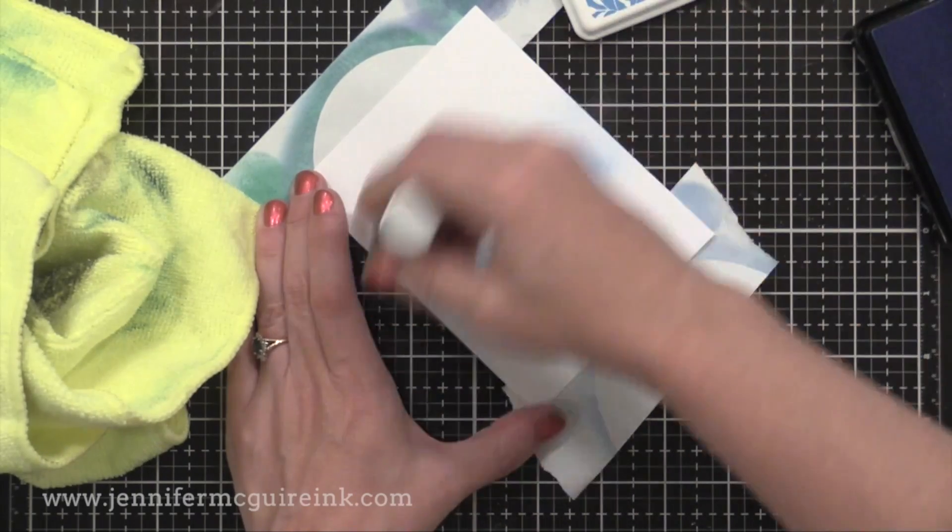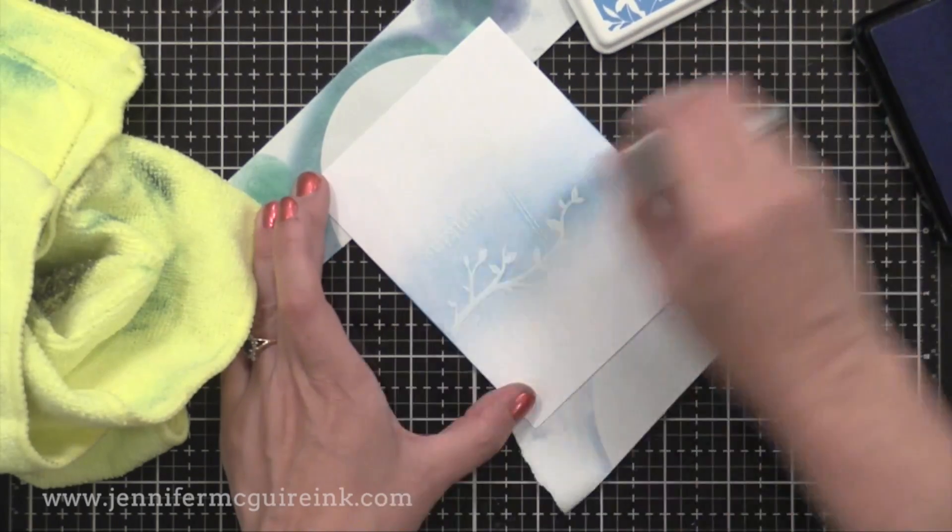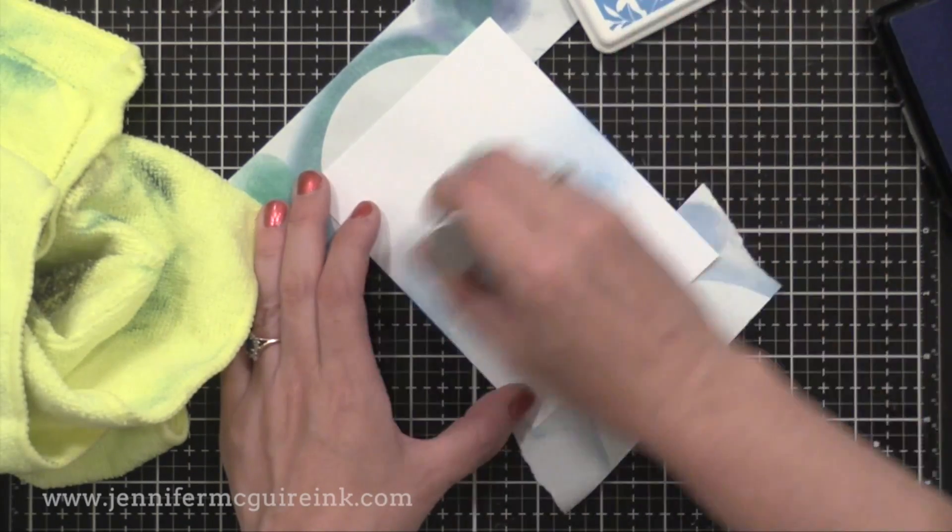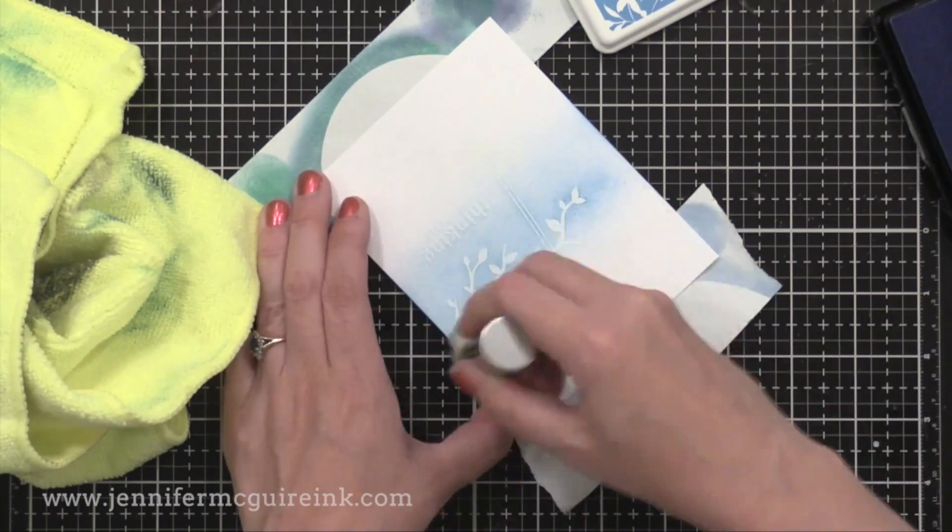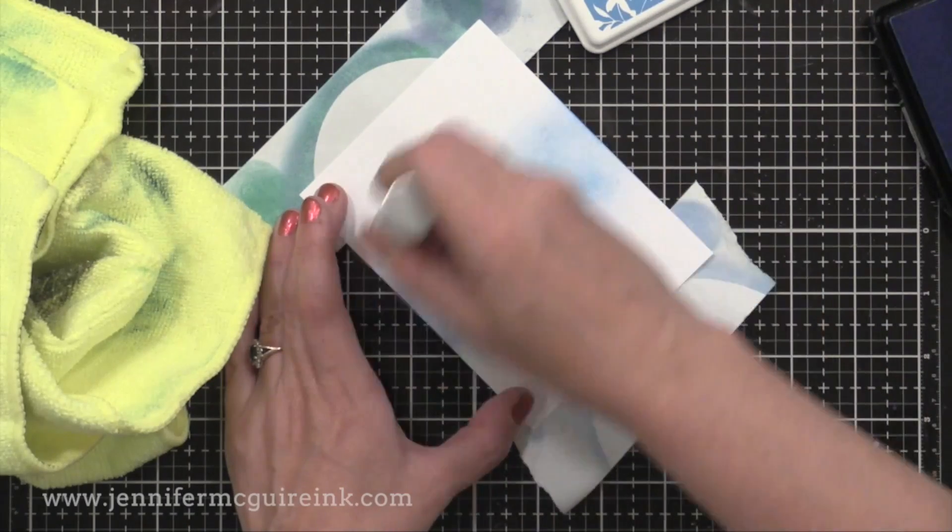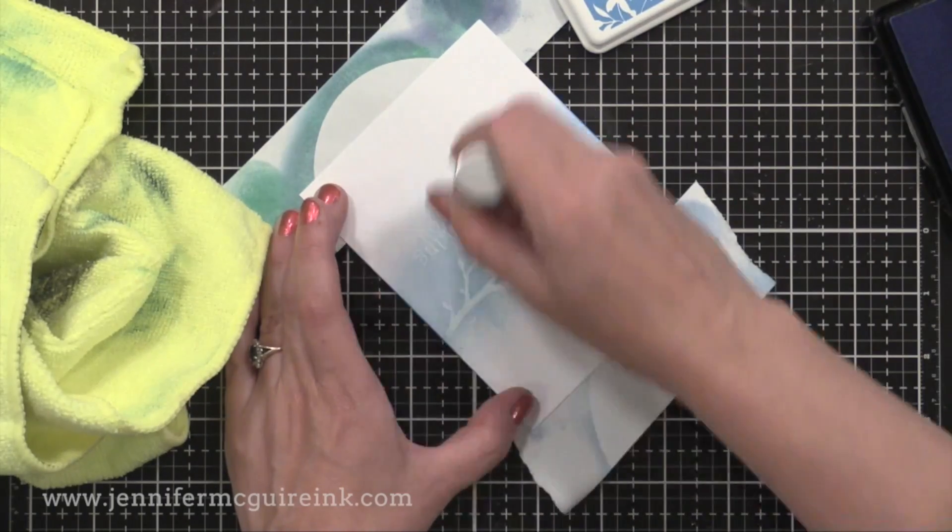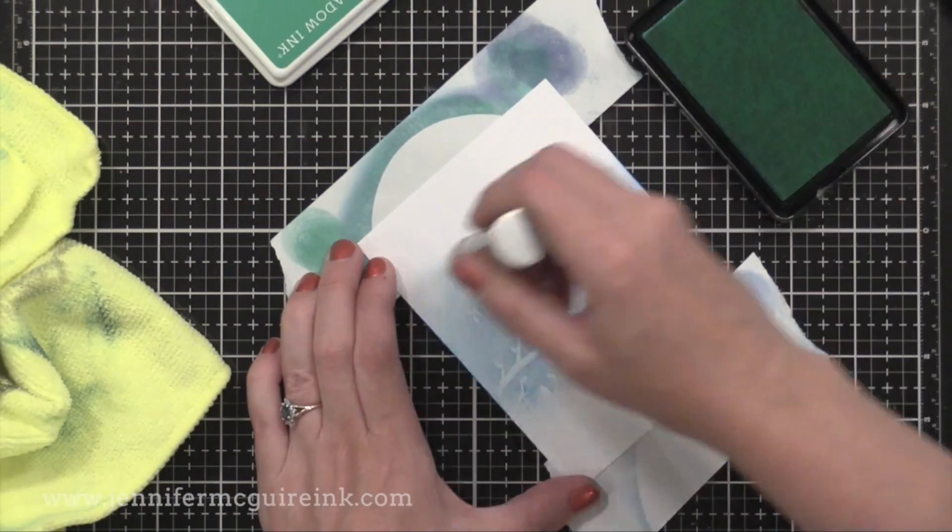So here I'm using a soft cornflower blue from Hero Arts. You can use a lot of different ink types here, and I'm brushing the color back and forth. Now you could stipple this by kind of pouncing up and down, or moving in circular motions, or just brushing back and forth.